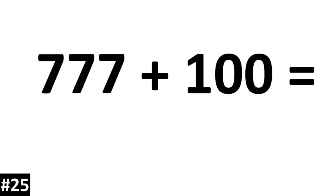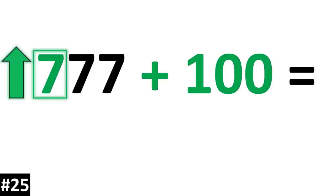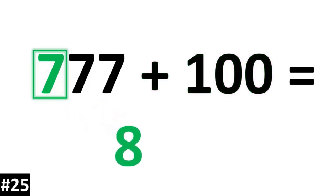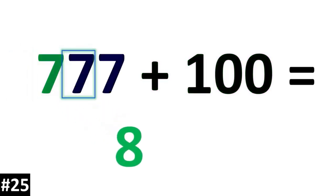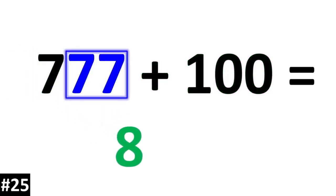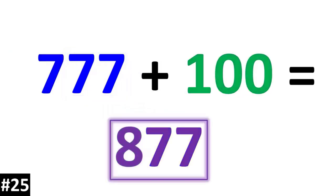And lastly, 777 plus 100. 777 has a hundreds digit of 7. We go up by 1, so it becomes an 8. The other numbers stay the same, and we have 877.